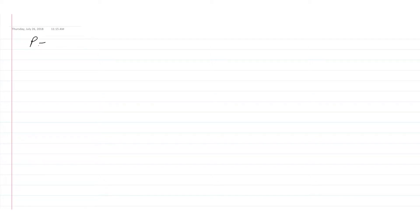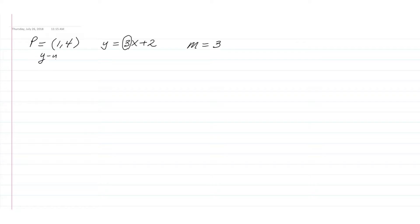Let's do some examples. We want to find the equation of a line containing the following point and parallel to the given line. The point we're given is one comma four, and the line is y equals three x plus two. We're given a point and a line, and we want it to be parallel. So we have the point and the slope — since we want exactly the same slope — we're going to use the point-slope formula, which is y minus y₁ equals m times x minus x₁.